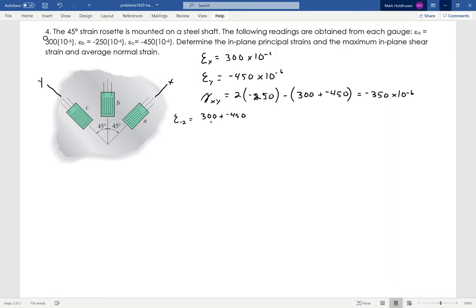Dropping the 10 to the minus 6 to make life easier, plus or minus. Plus is the principal strain 1, minus would be principal strain 2. It's 300 minus negative 450 divided by 2, squared.